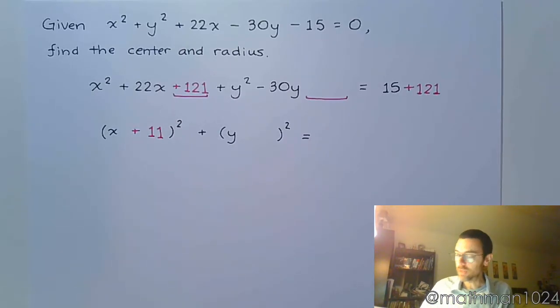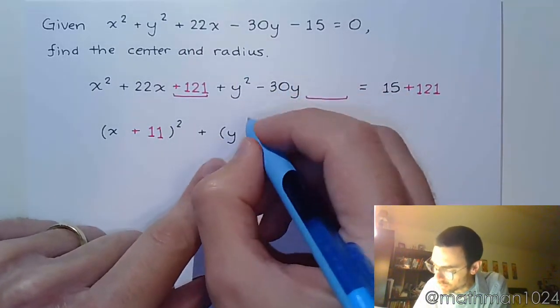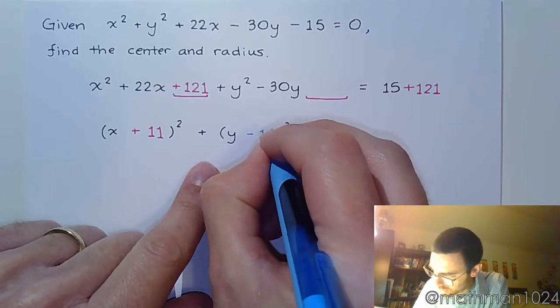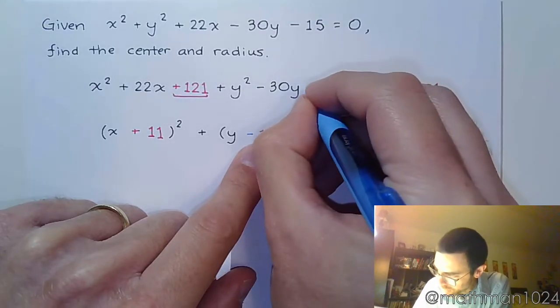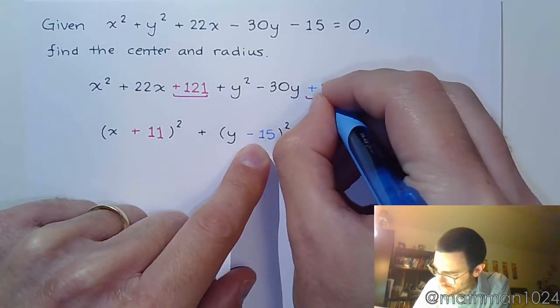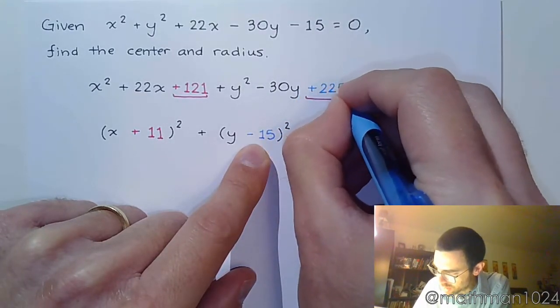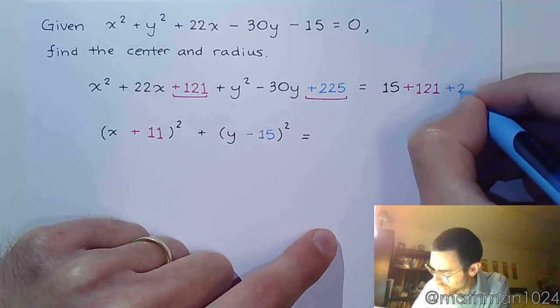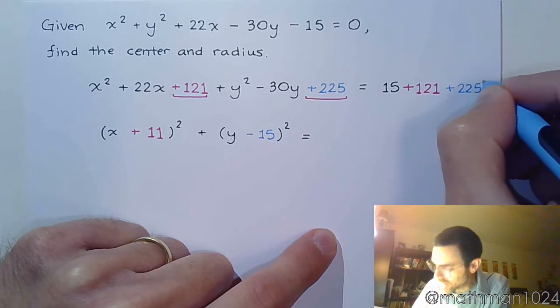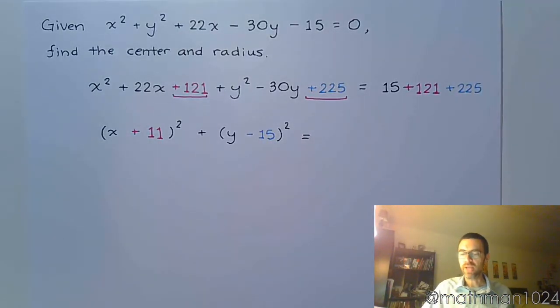And then we'll move on to the y's. So half of negative 30 is negative 15. And when I square negative 15, I get plus 225. So that's what I'm adding over here to the right side to create that balance we're supposed to have.